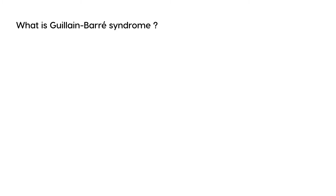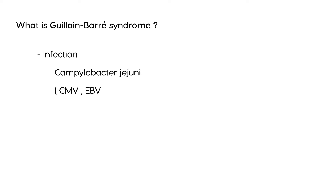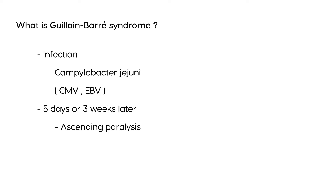In Guillain-Barré syndrome, a person is typically infected first. The most common pathogen is Campylobacter jejuni, but others like cytomegalovirus or Epstein-Barr virus can also be responsible. About five days to three weeks after the infection, the person starts to develop ascending paralysis — weakness that begins in the legs and progresses upward to the arms.